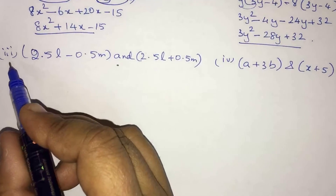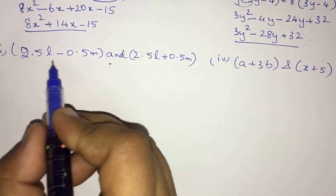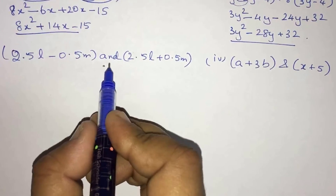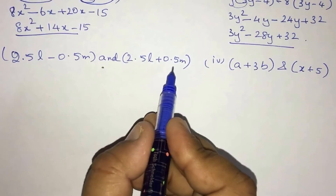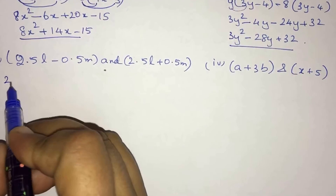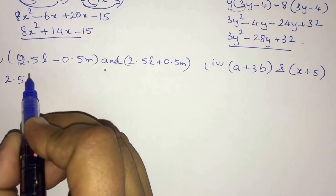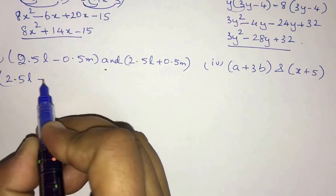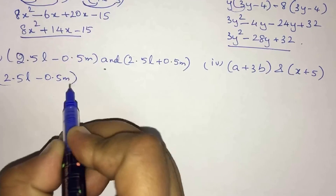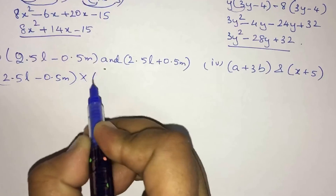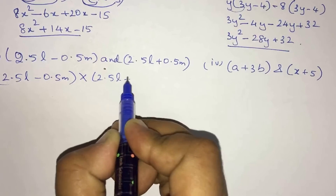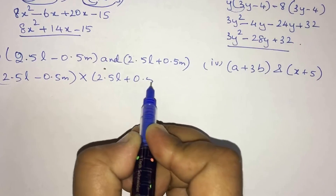Question number 3: multiply 2.5L minus 0.5m and 2.5L plus 0.5m. So we set up (2.5L - 0.5m) into (2.5L + 0.5m).